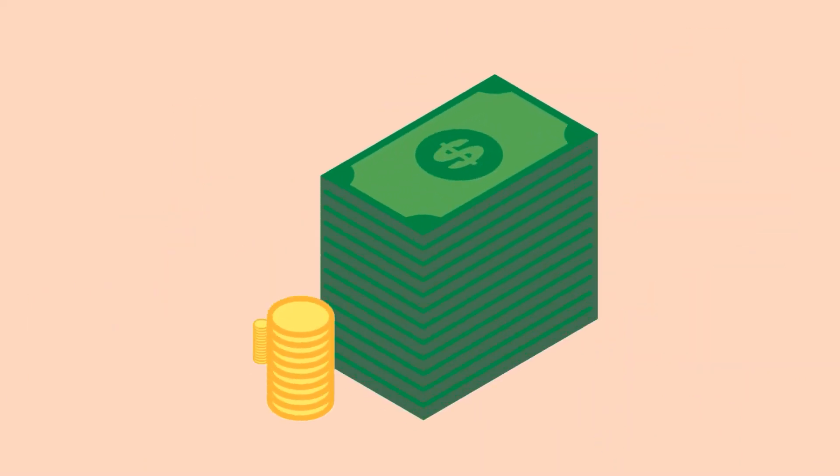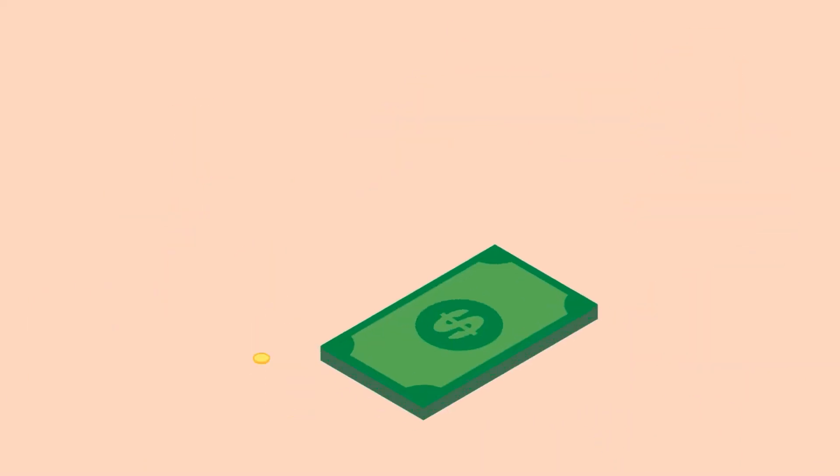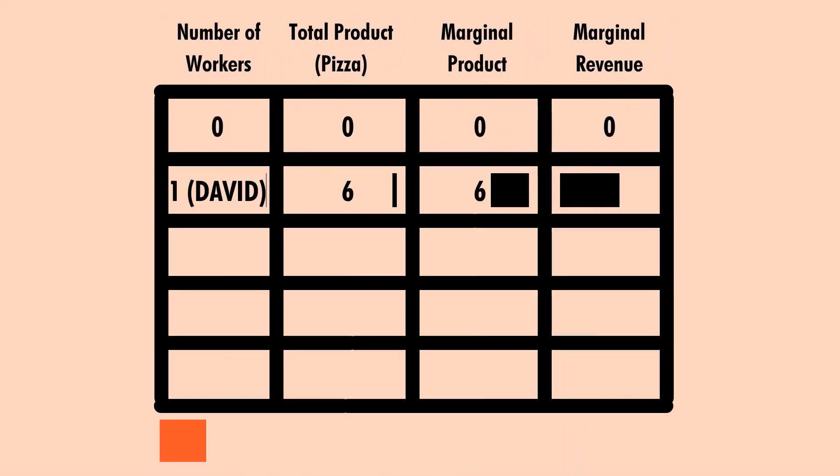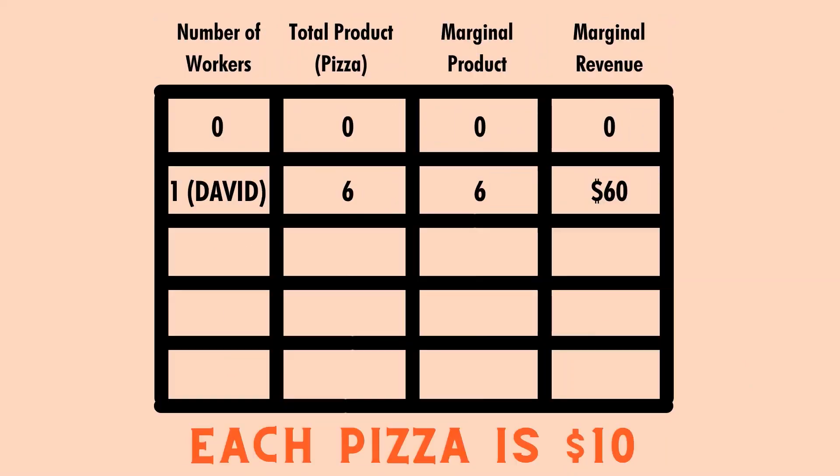This is also good news for Keynes because that means he's earning a lot of revenue. Let me show you a table that will provide a better understanding of this topic. The table has four columns: the number of workers hired by Keynes; the total product, which is the total number of pizzas produced by all workers; the marginal product, which is the number of pizzas produced by each worker alone; and the marginal revenue, which is the marginal product times the price per pizza.